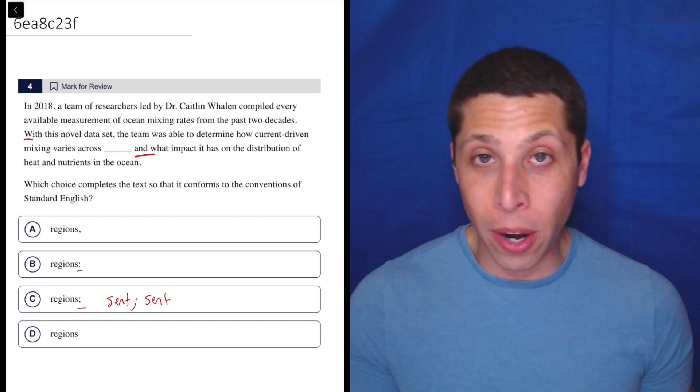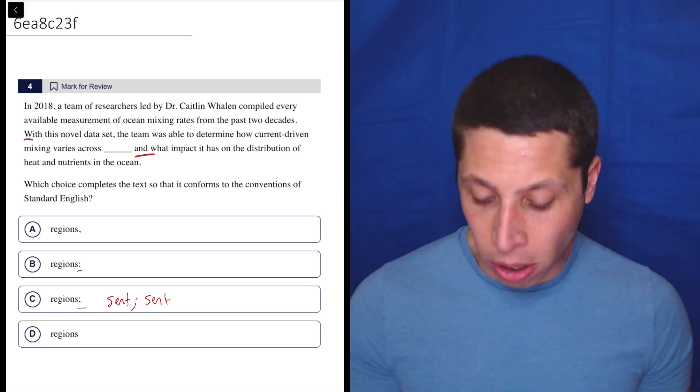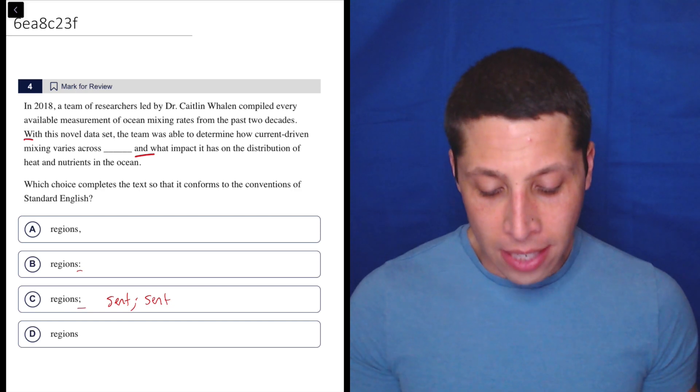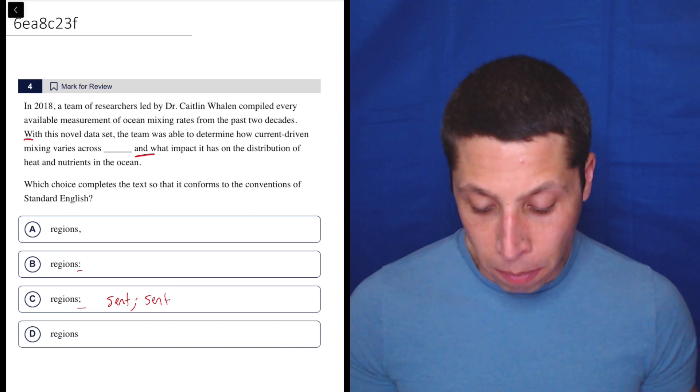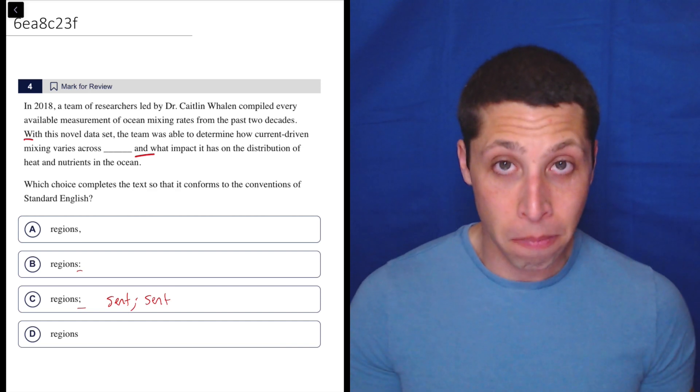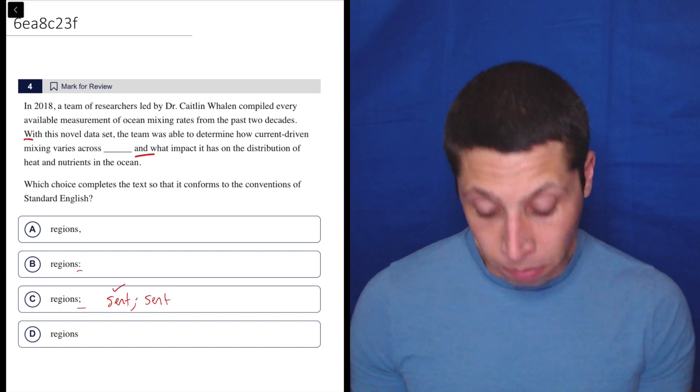I'm going to start with the word with where the sentence I care about actually starts. With this novel data set, the team was able to determine how current driven mixing varies across regions. That sounds like a sentence. So step one, check.